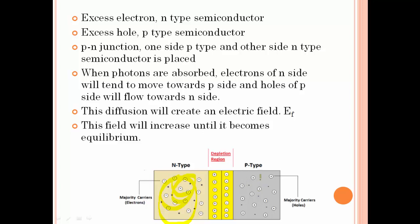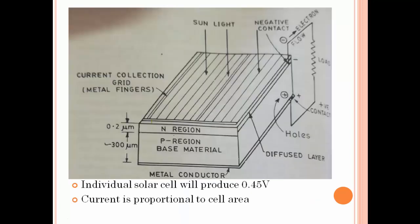When photons are absorbed, the electrons on the n-side get higher energy. This diffusion creates an electrical field. The movement of electrons generates electrical energy, which is extracted by means of an electrical load. This is also shown in another representation of the p-n junction.